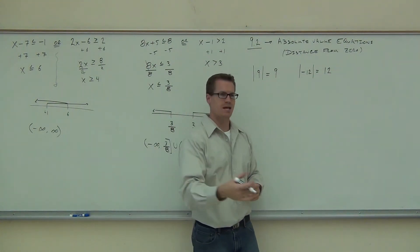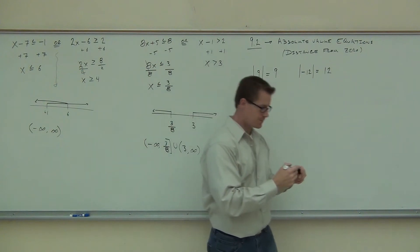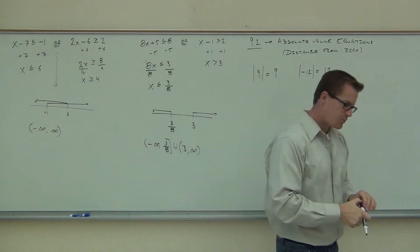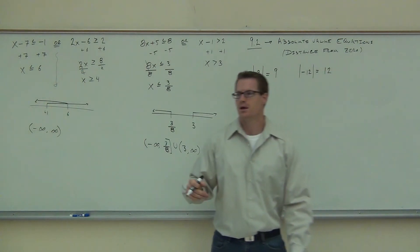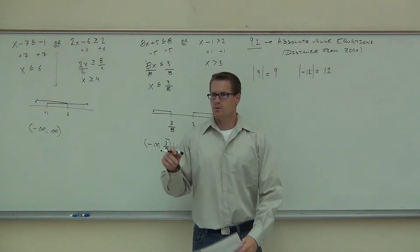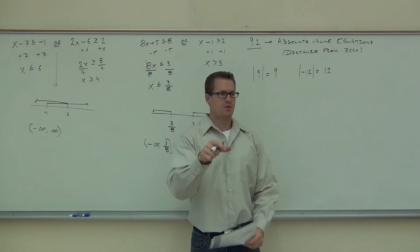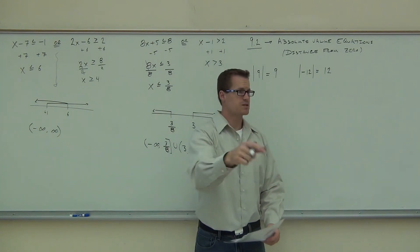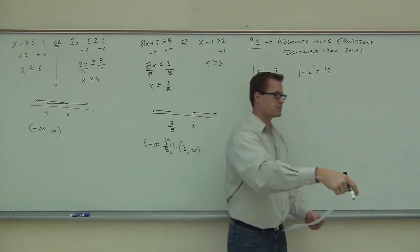Even though that was a negative, we're talking about the distance from zero. Basically, absolute value takes a positive number and keeps it positive, and takes a negative number and makes it positive.